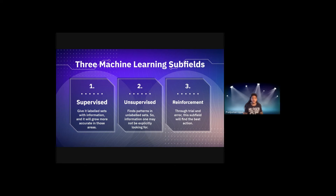An example of each: for supervised learning, an app that identifies recyclable items gathers data over time, builds on it, and finds common similarities. For unsupervised, that would be when companies report that 80% of their clients are from the commercial sector — patterns found in raw data. Reinforcement, however, is a little tricky because it's very case-specific, so it's hard to pin down one clear general example.